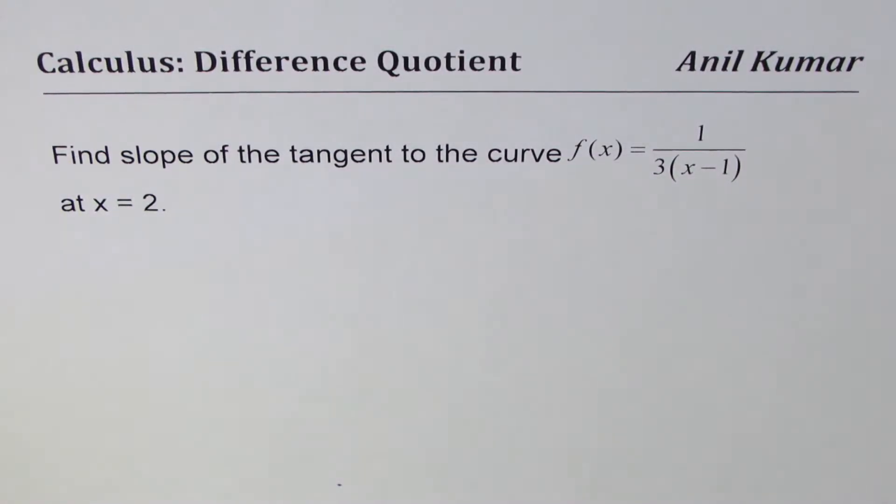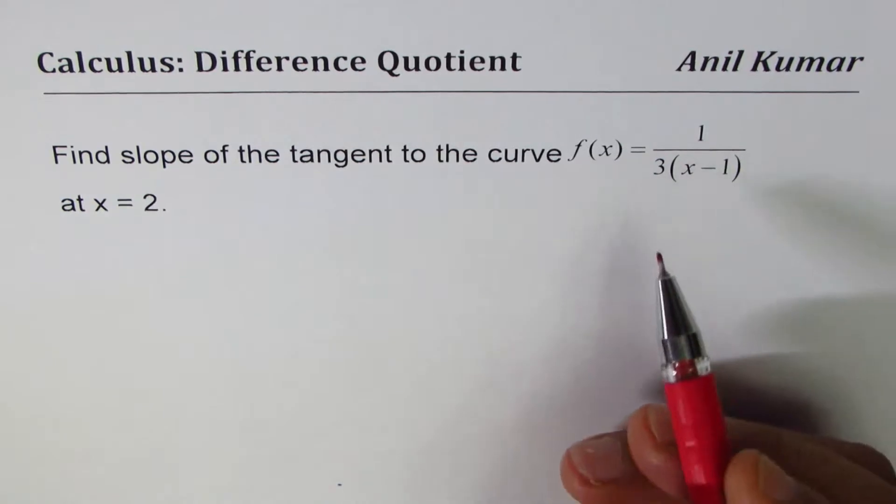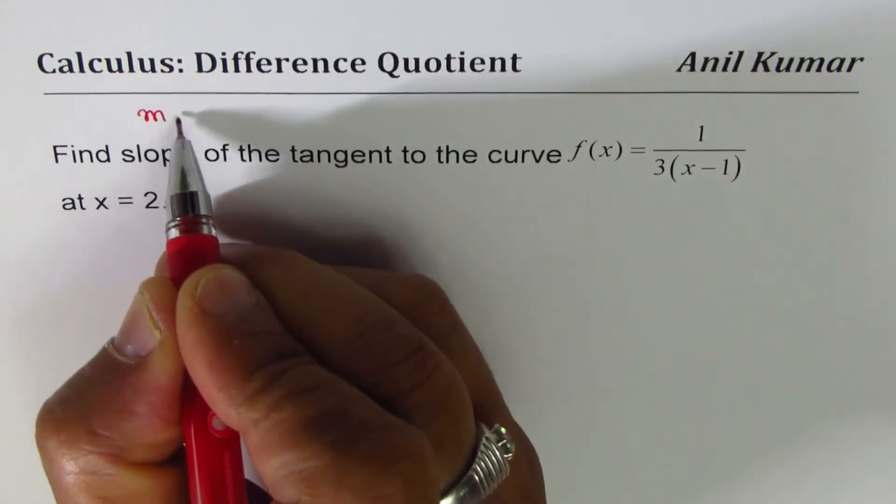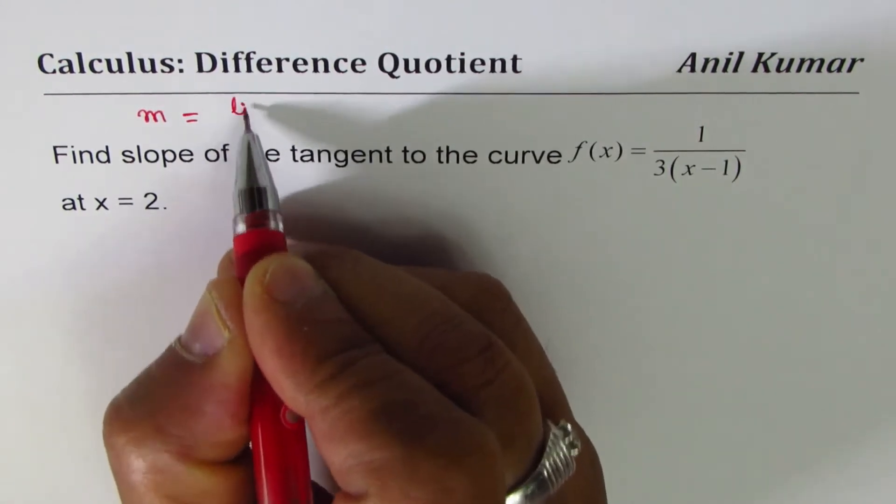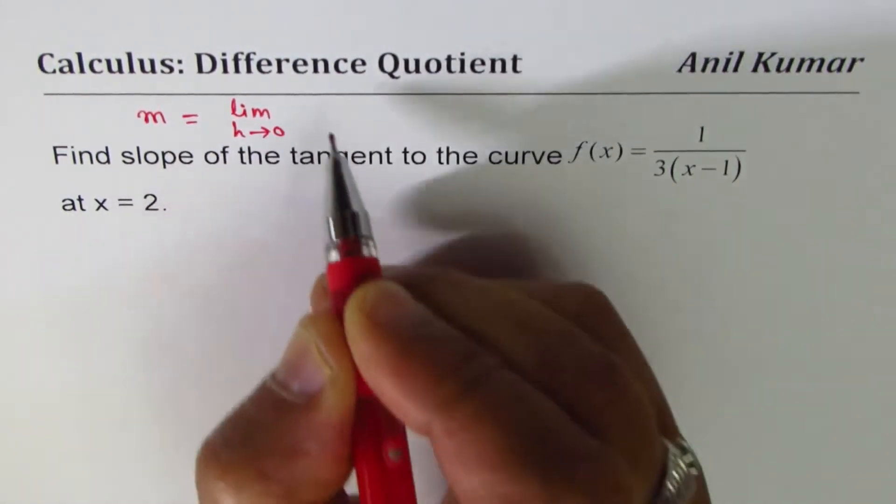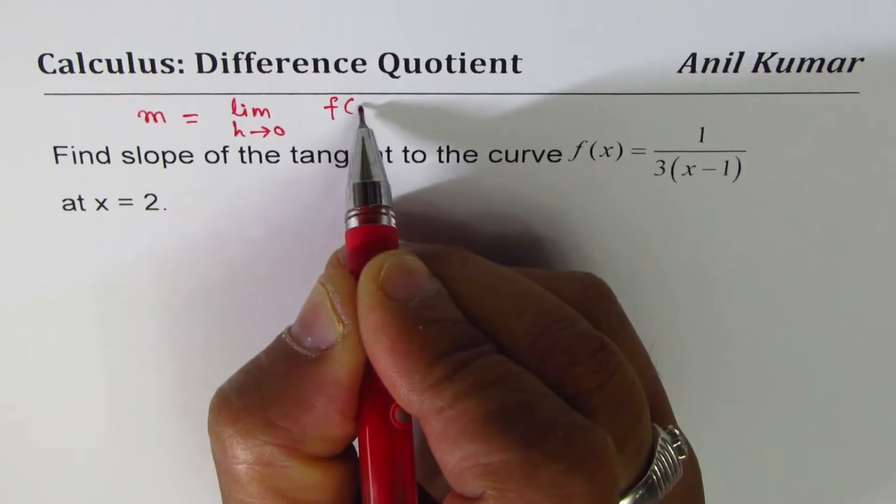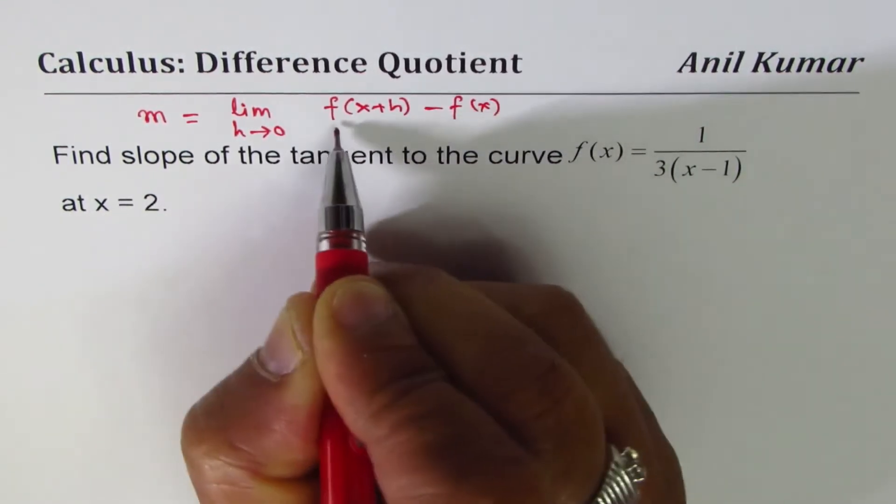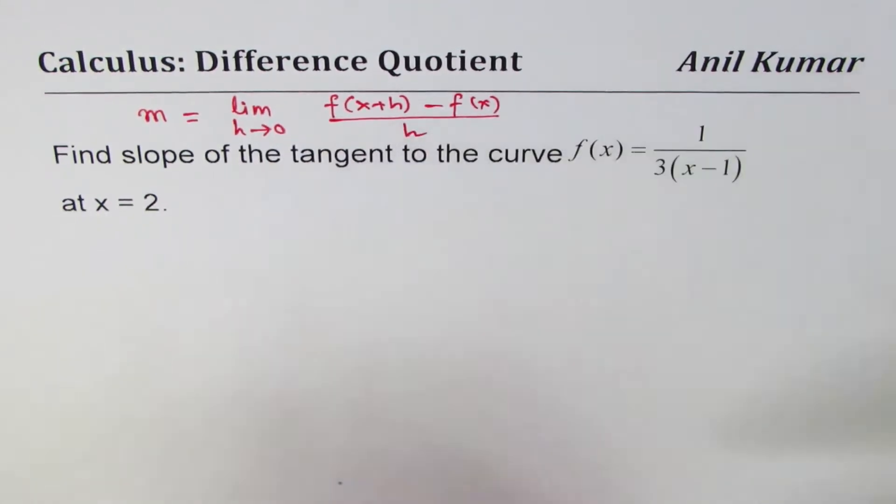I'm Anil Kumar sharing with you a practice question on finding slope using the difference quotient method. The formula for slope using the difference quotient method is: slope m equals limit as h approaches 0 of f(x+h) minus f(x) over h. That's the formula of difference quotient which we'll use to find the slope.